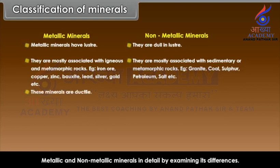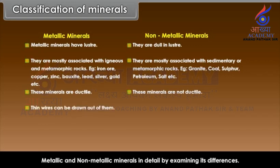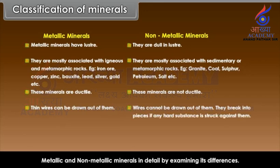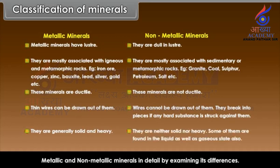Metallic minerals are ductile, while non-metallic minerals are not ductile. Thin wires can be drawn out of metallic minerals, whereas wires cannot be drawn out of non-metallic minerals — they break into pieces if any hard substance is struck against them. Metallic minerals are generally solid and heavy, while non-metallic minerals are neither solid nor heavy; some of them are found in liquid as well as gaseous state.